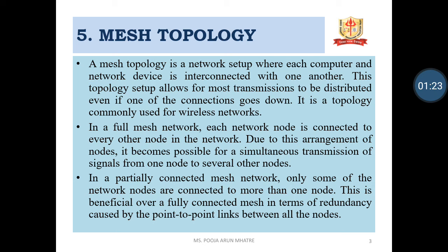The special protocol called a media access control protocol is not required to be used. In a full mesh network, each network node is connected to every other node in a network. Due to this arrangement, it becomes possible for simultaneous transmission of signals from one node to several other nodes. In a partially connected mesh network, only some of the network's nodes are connected to more than one node. This is beneficial for fully connected mesh in terms of the redundancy caused by the point-to-point links between all the nodes.